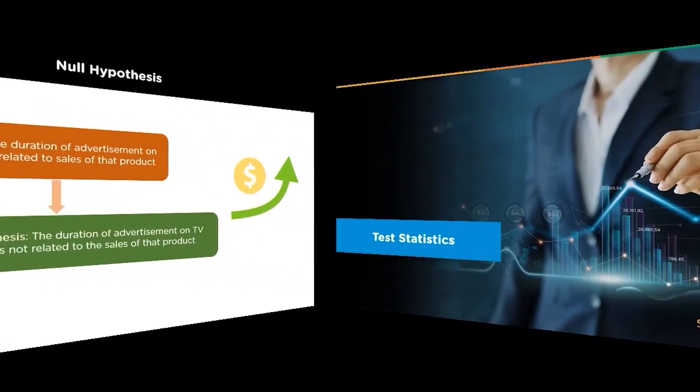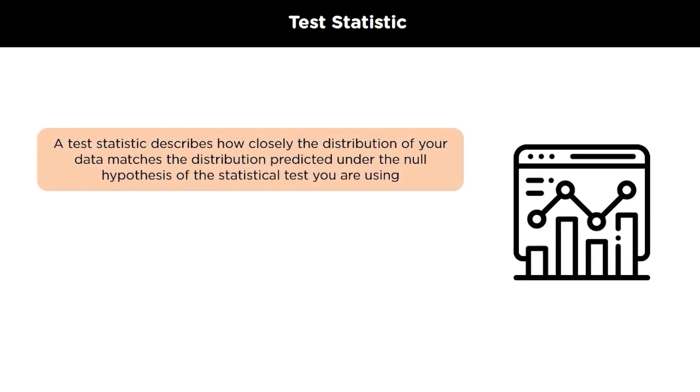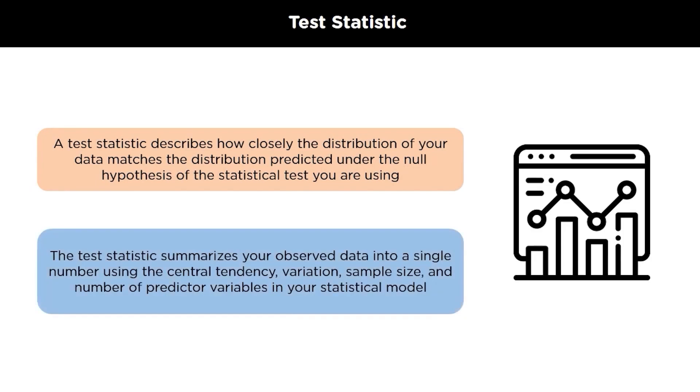Now we will move on to the test statistics that are frequently discussed when creating hypothesis testing. The test statistics is a number calculated from the statistical test of a hypothesis. It shows how closely your observed data matches the distribution expected under the null hypothesis of data statistical test. The distribution of the data is how often each observation occurs and can be described by its central tendency and variation around the central tendencies. The test statistics summarizes your observed data into a single number using the central tendency, variation, sample size, and the other number of predictable variables in a statistical model.